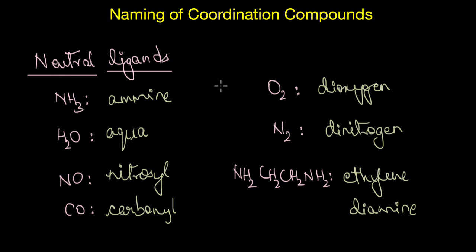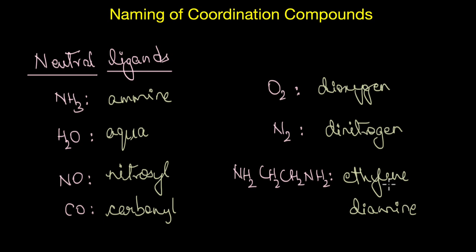The names of neutral and cationic ligands are generally the same as the molecule name, except for a few special cases: water is called 'aqua', ammonia is 'amine', CO is 'carbonyl', and NO is 'nitrosyl'. For other neutral ligands such as O₂ (dioxygen), N₂ (dinitrogen), and ethylenediamine (also named ethane-1,2-diamine), the names remain exactly the same as the molecule.